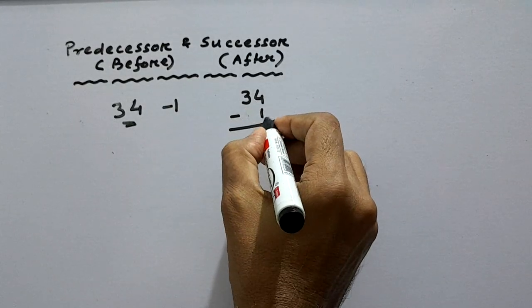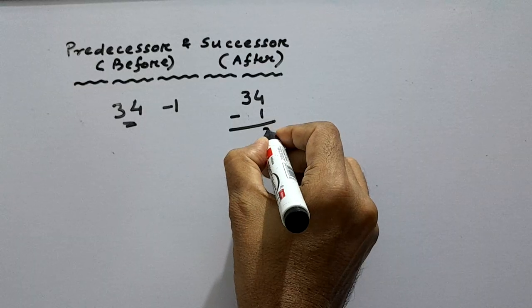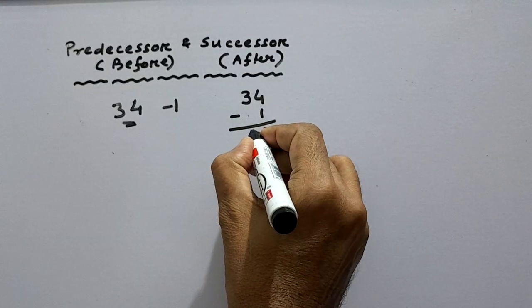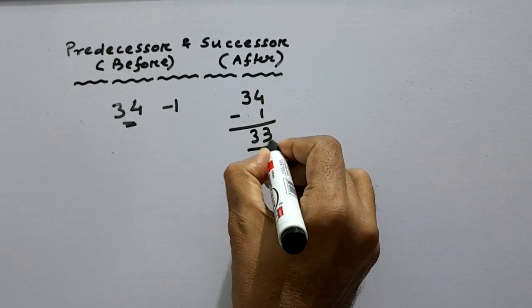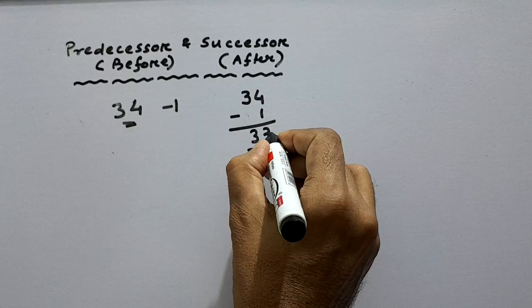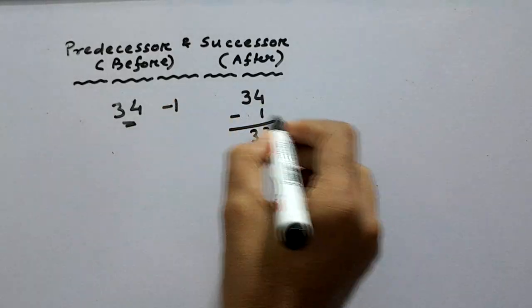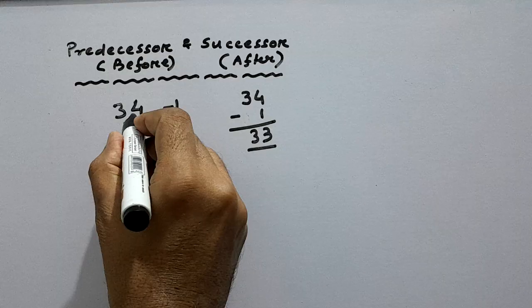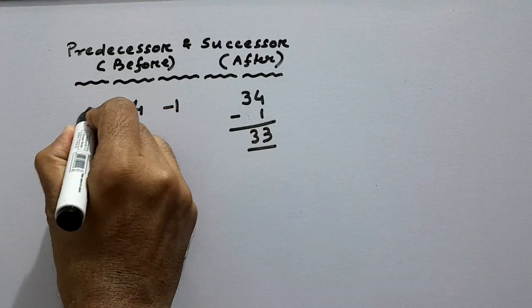So 34 minus 1. 4 ones minus 1 is 3, and 3 in the tens place. So 33 is before 34. This is one example.